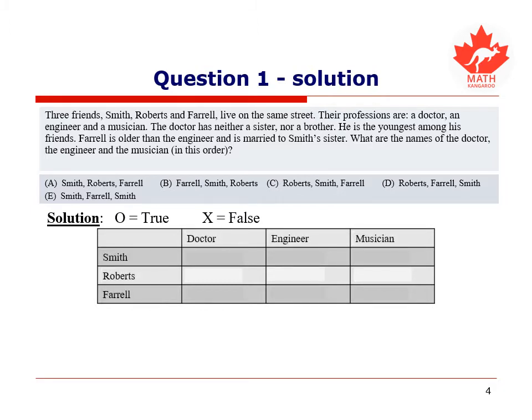From the given information, Farrell is older than the engineer. So Farrell is not the engineer as they are two different people. Also, since the doctor is the youngest of all, and Farrell is older than the engineer, Farrell is not the youngest, and hence not the doctor.